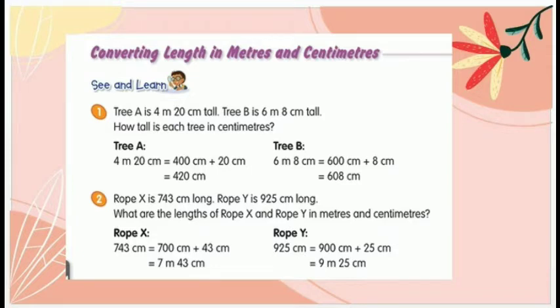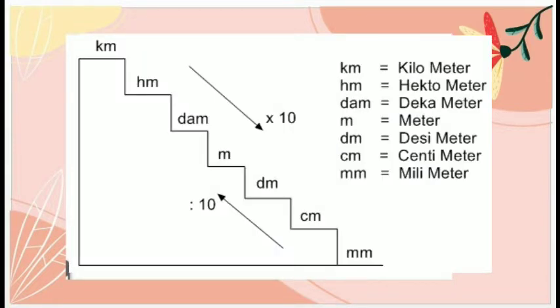Coba kita lihat lagi untuk tangga dari satuan panjang. Pada satuan panjang, dimulai dari kilometer, hektometer, dekameter, meter, desimeter, sentimeter, dan milimeter. Sentimeter ada di bawah meter, yaitu dua tangga. Jadi setiap turun tangga satu, ditambah nolnya satu. Di sini turun tangga dua, jadi nolnya ditambah dua, atau seratus.